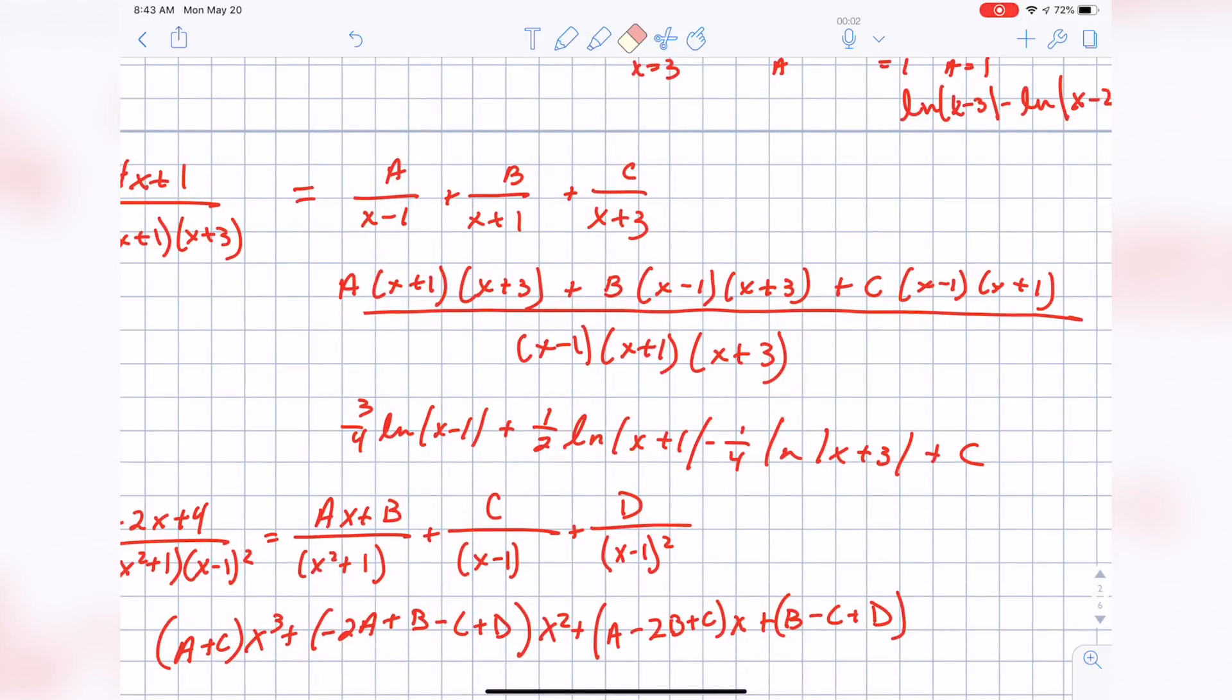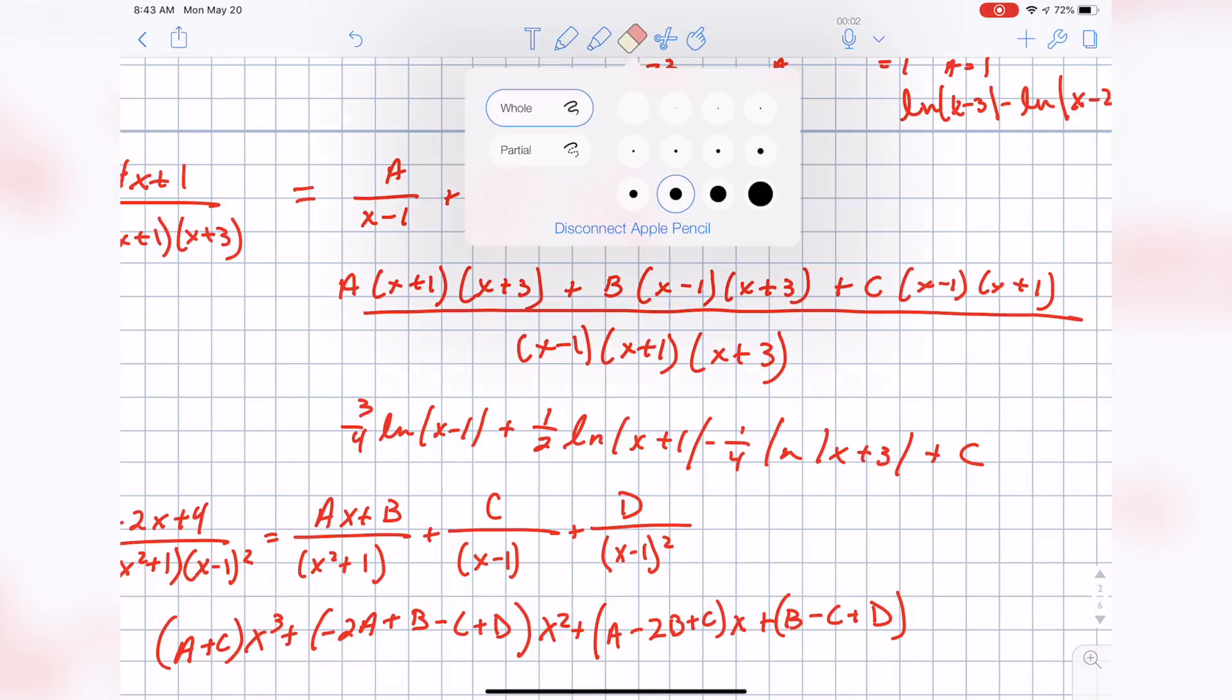One of my biggest gripes with Notability was always that the eraser would eliminate your entire stroke. So if you had a more complex stroke or drawing, this is a bad example of that, but if you just wanted to modify just a tiny bit, you couldn't. But now, you can.